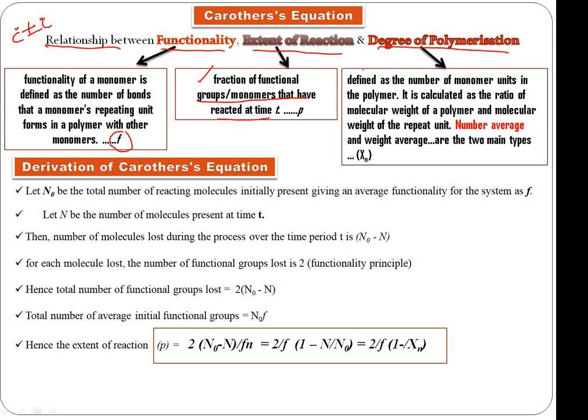Third is degree of polymerization. It is defined as the number of monomeric units in a polymer. It can be calculated as the ratio of molecular weight of polymer and the molecular weight of repeating unit. This degree of polymerization can be expressed as number average or weight average. Normally we use number average degree of polymerization, denoted by Xn.